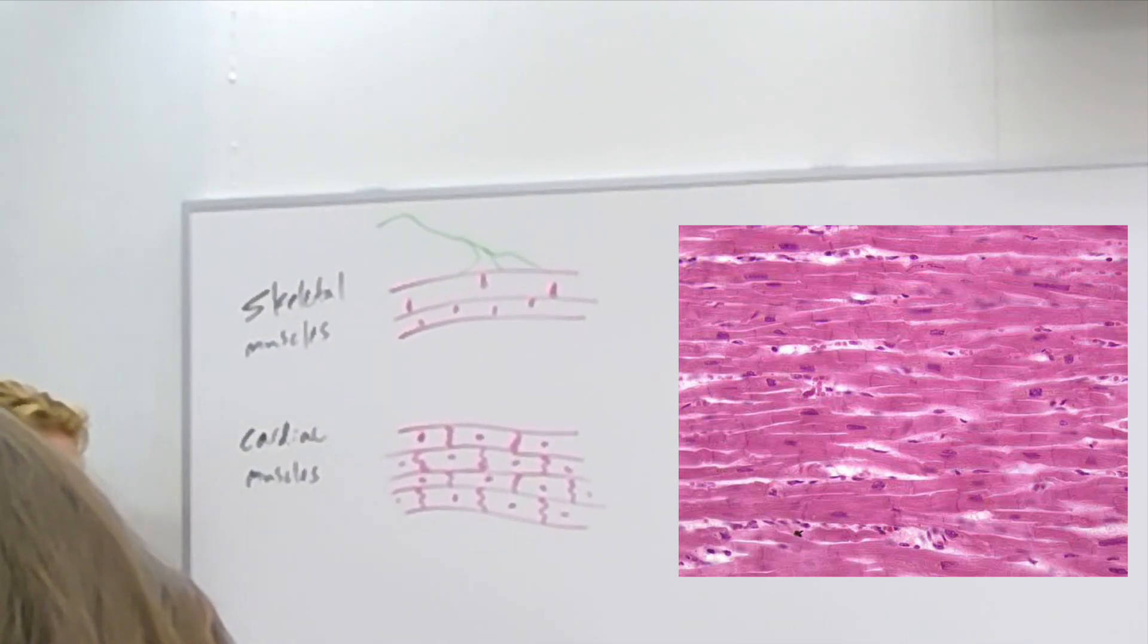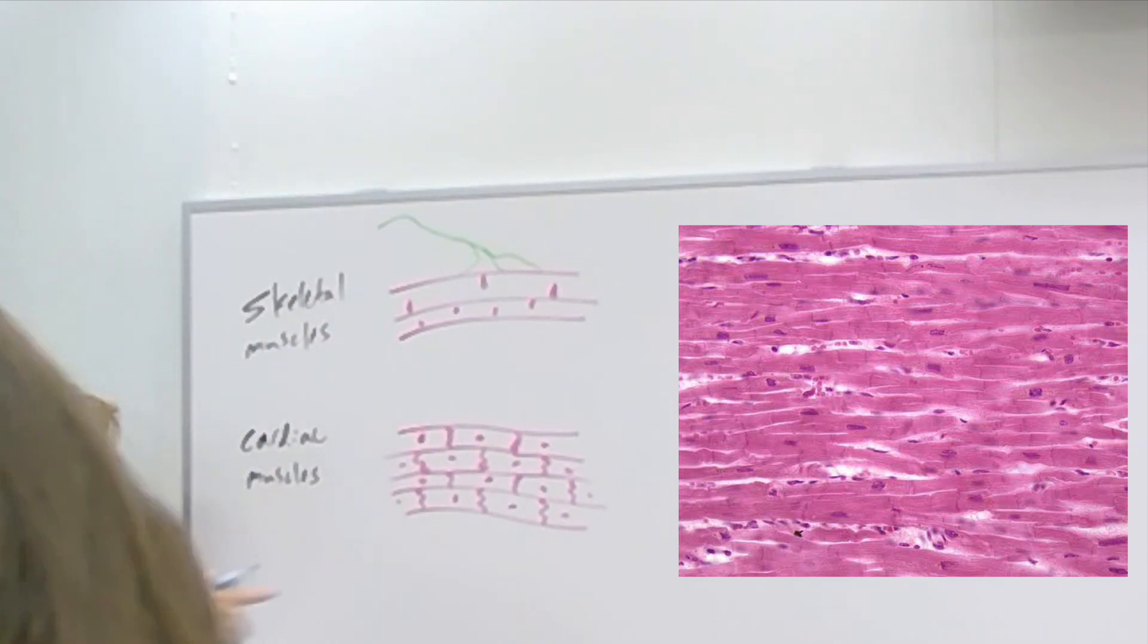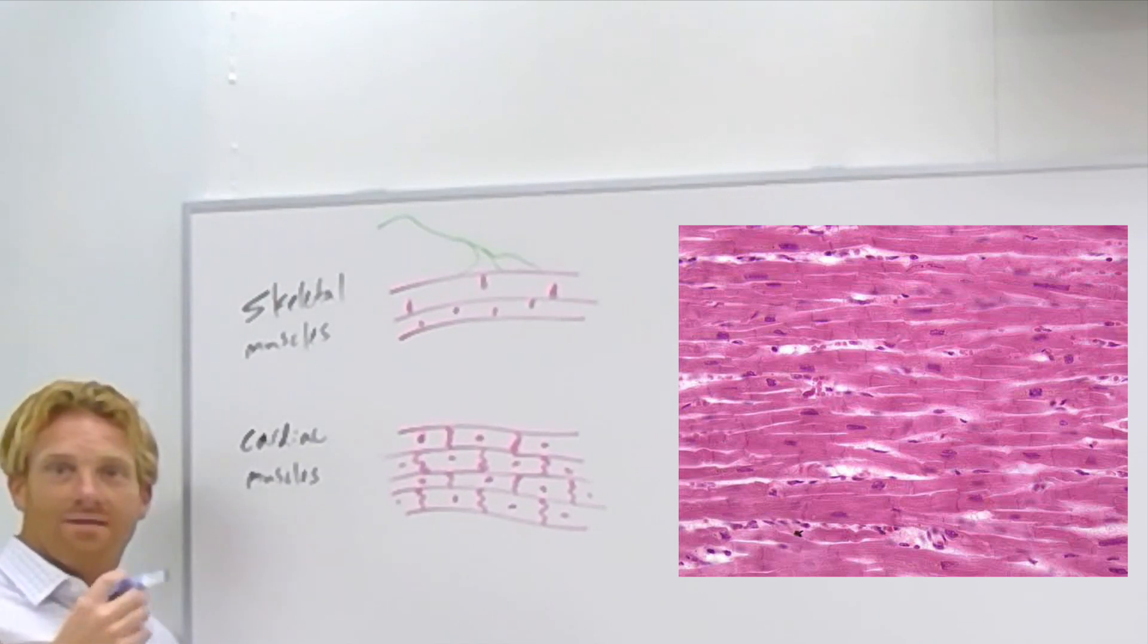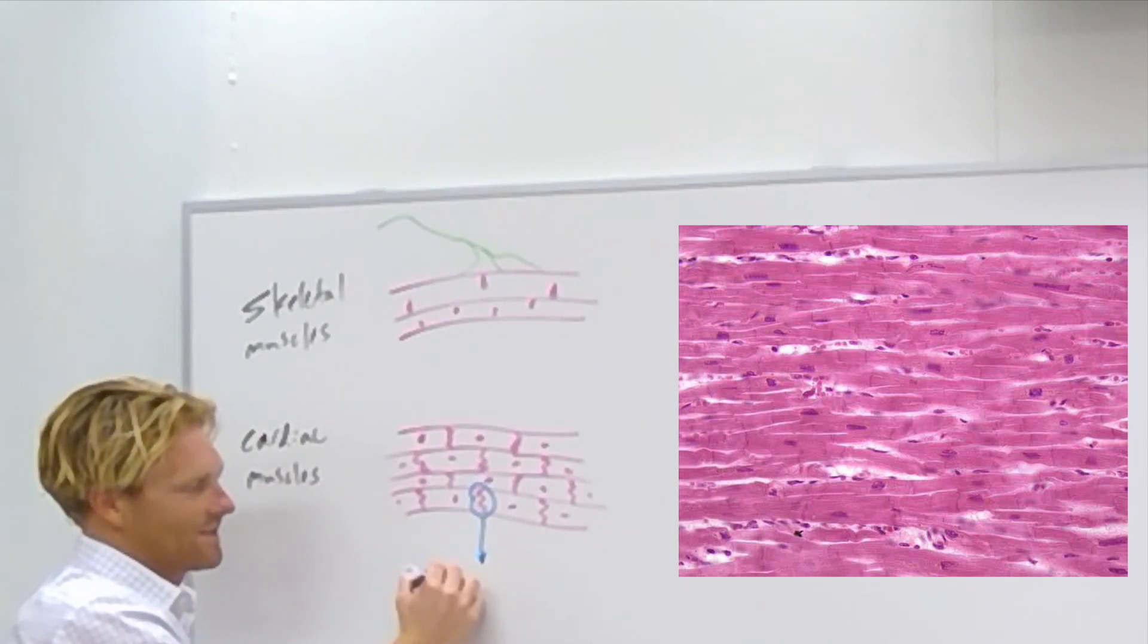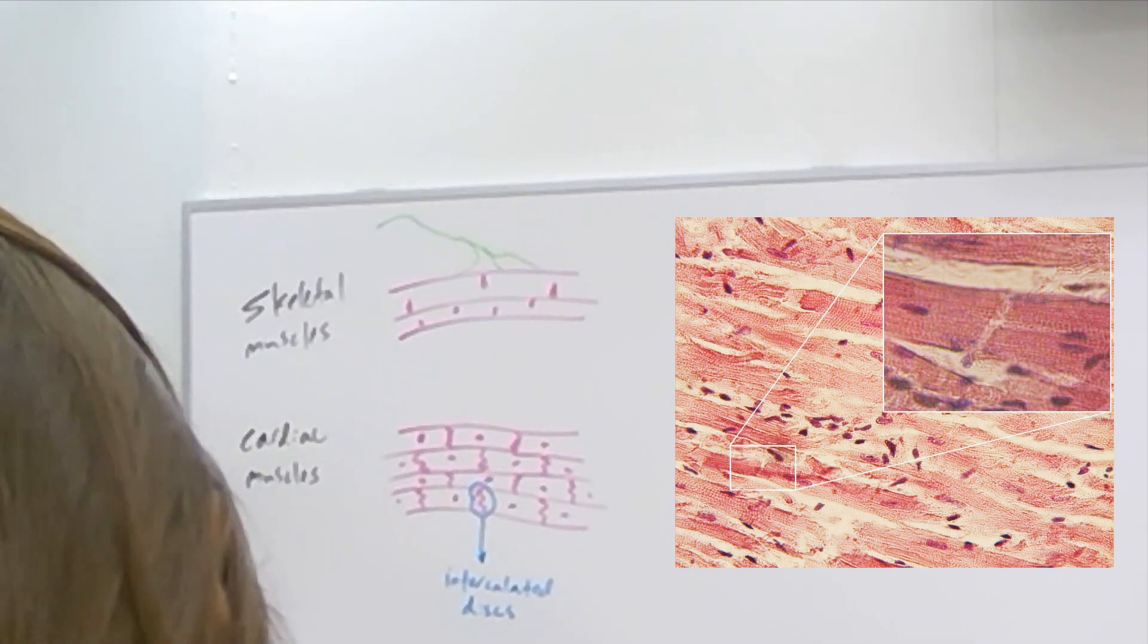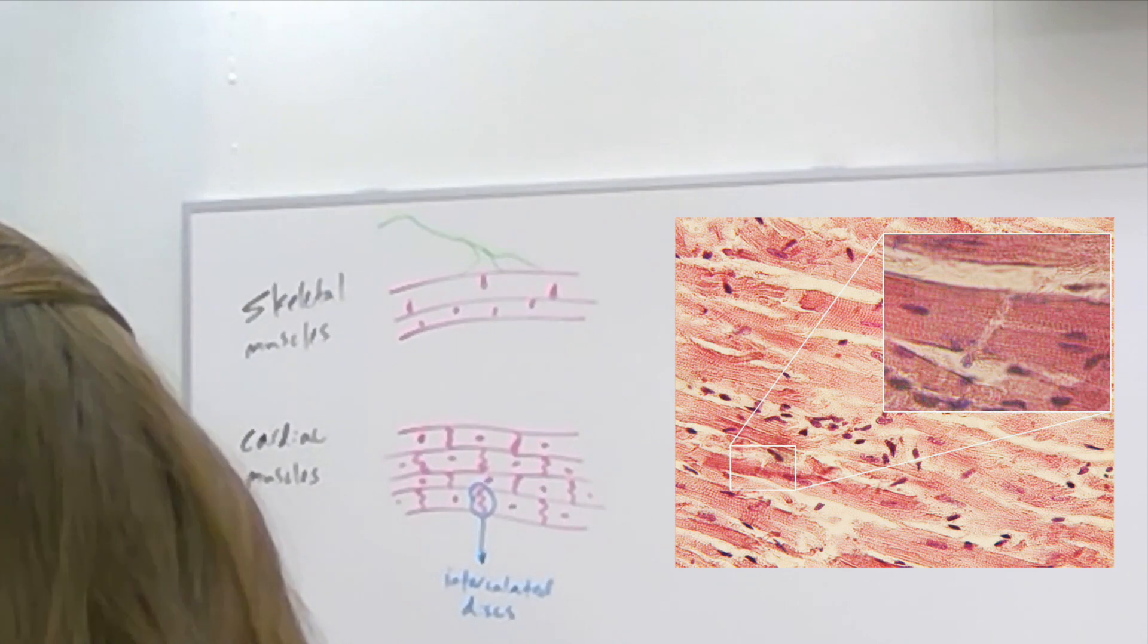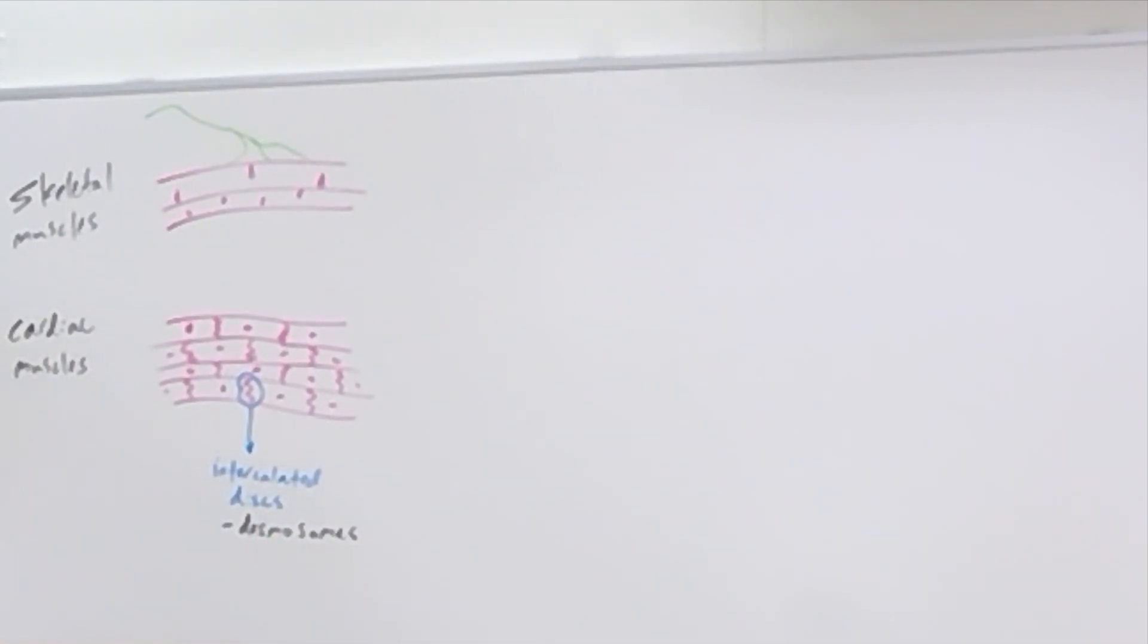What's unique about these cardiac muscle cells is that these little squiggly lines that connect the muscles end-to-end, these squiggly lines have a name. These squiggly lines are called intercalated discs. And these intercalated discs are made up of a special type of protein junction that unites two cells together. This protein junction is made up of desmosomes. So these intercalated discs contain a bunch of desmosomes.